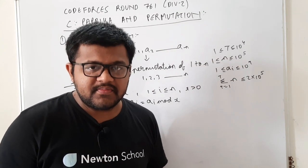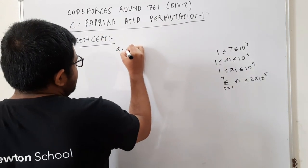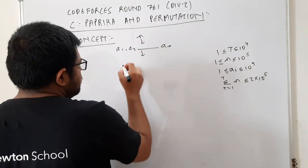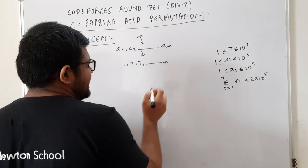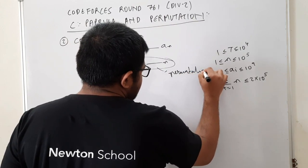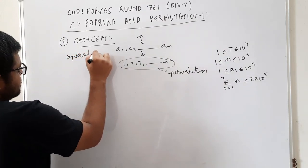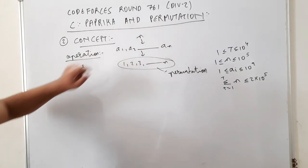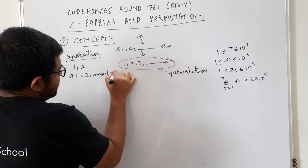I hope question clear है। Concept की बात करें तो हमें एक array A दिया गया है जिसके elements A1 to AN हैं, size N है, और इसको 1 to N के किसी भी permutation में convert करना है। मतलब कि last में elements 1, 2, 3, up to N, सभी exactly एक बार occur करेंगे, order कुछ भी हो सकता है। एक operation में हम कोई भी index I और X select करके AI को AI mod X से replace कर सकते हैं।